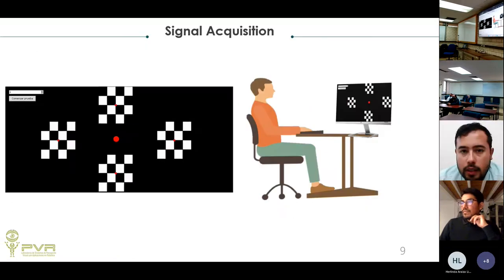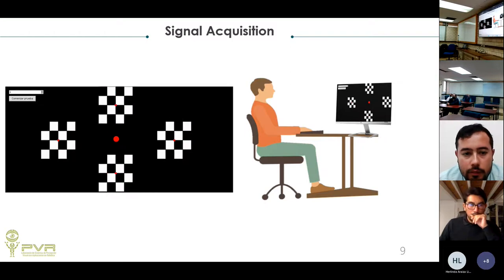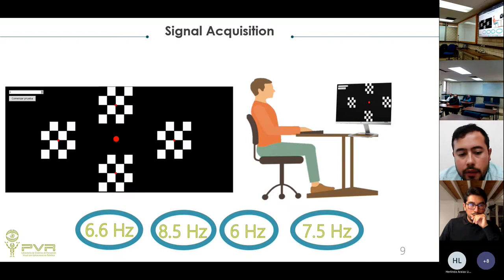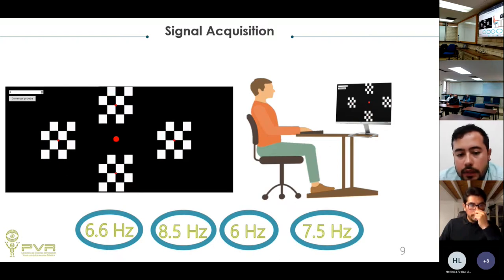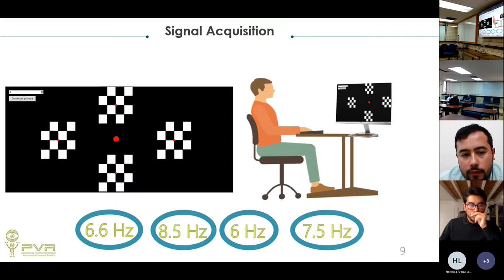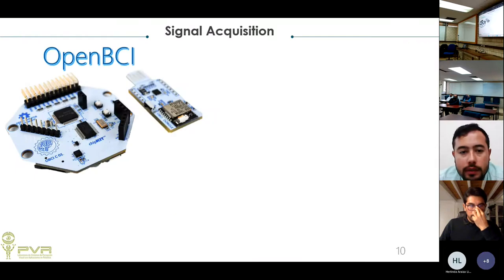A dataset was created using two checkerboards with color inversion at frequencies of 6.6, 8.5, 6, and 7.25 Hz, with 12 subjects. EEG signals were acquired using OpenBCI with Gold Cup electrodes located at FPC-A1 (ear reference) and the occipital channel OC, which captures visual brain activity.